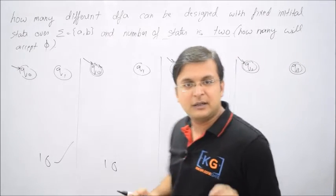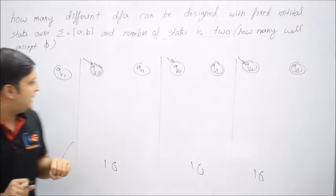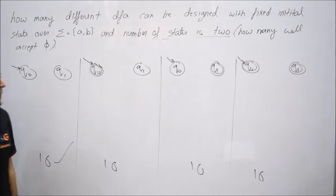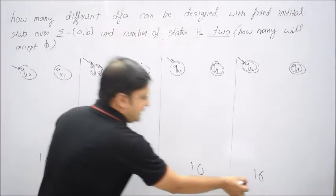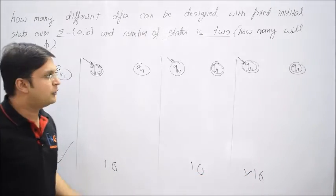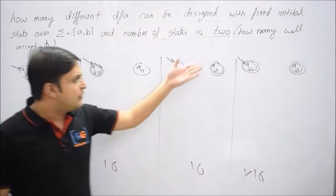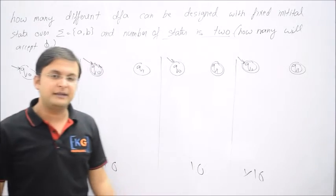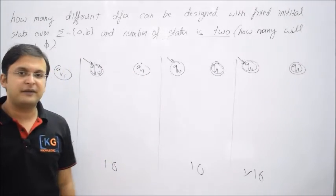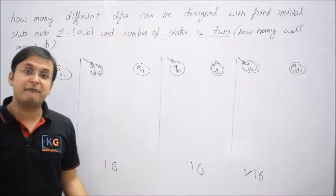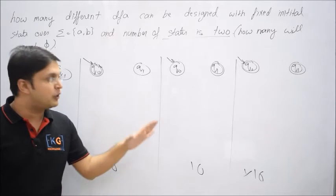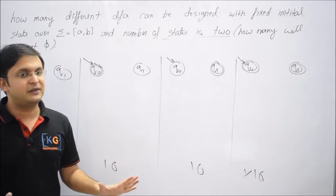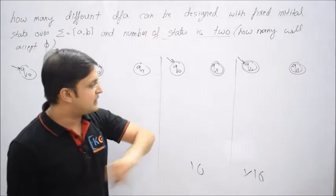Now you see, as case one was very easy to be taken, now it is very easy to be rejected. I hope you understand why: because you see both the states are of final nature. If both the states are final, no matter what transition you said, everything is going to be accepted and we want that nothing is to be accepted, yes or no?